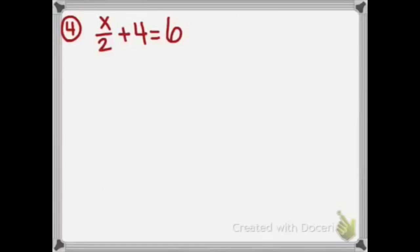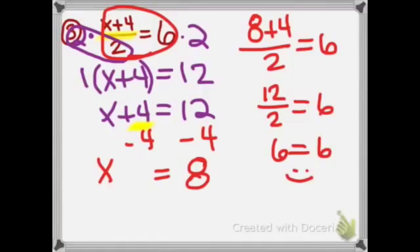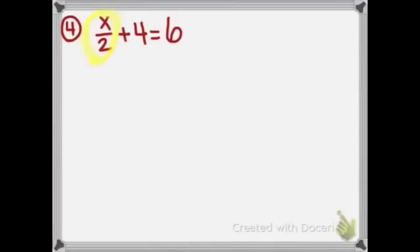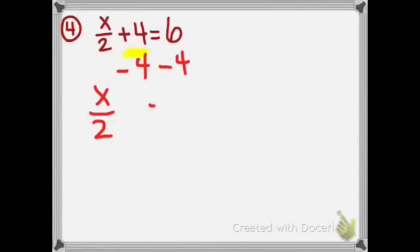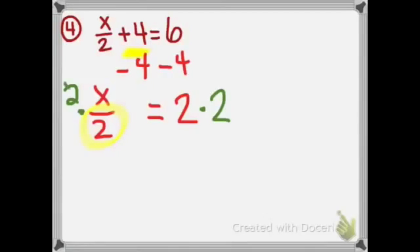Our final type is number 4, which is a small fraction. Do you see the difference between that and the previous problem? We had a large fraction on number 3, and on number 4 we have a small fraction. So we're not going to do step number 2, because that's only for large fractions. We're going to start with step 3: add or subtract the term without the variable, which is plus 4. So we say minus 4, bring down x divided by 2. 4 minus 4 is 0, equals 6 minus 4 is 2. Now we do step 4: multiply or divide the number with the variable. This says divide by 2, so we do the opposite, which is multiply by 2. 2 divided by 2 is 1x, equals 2 times 2 is 4. So x equals 4.